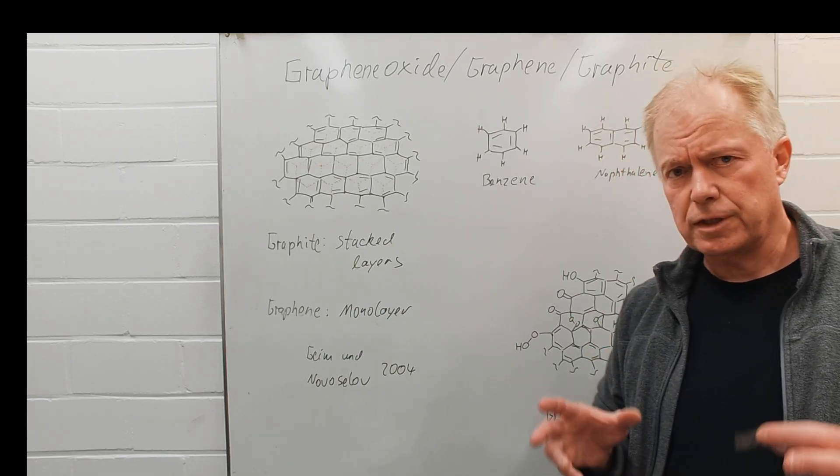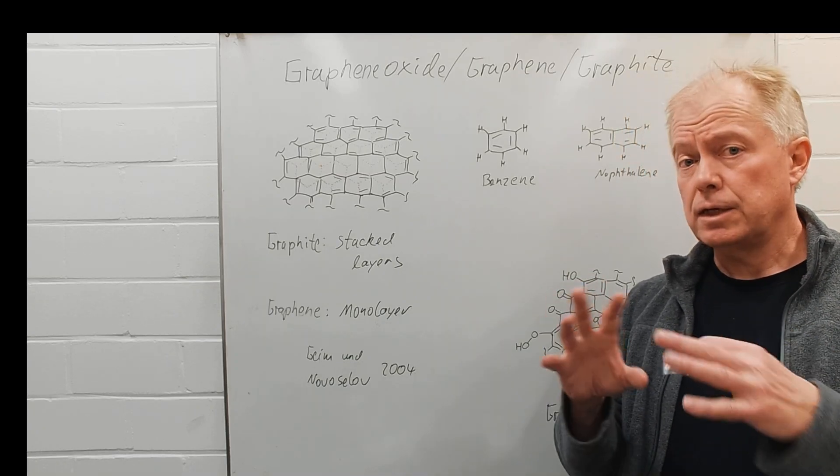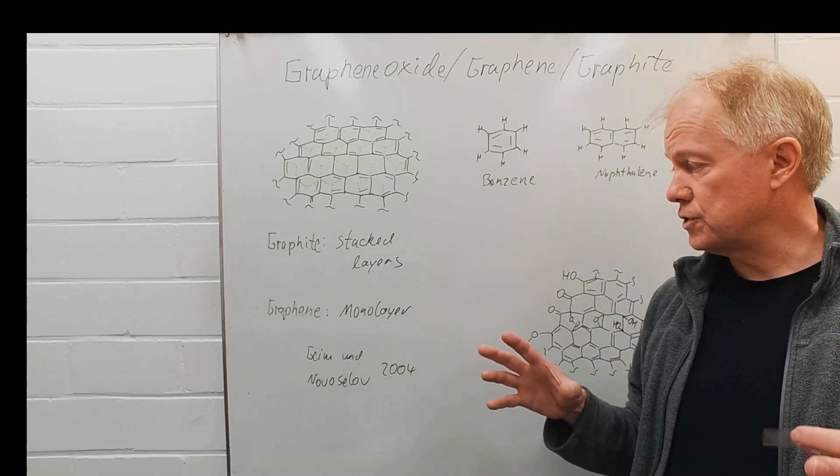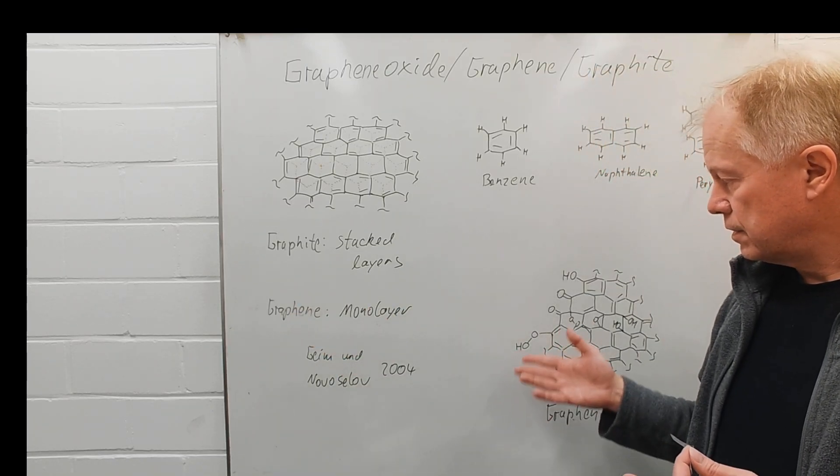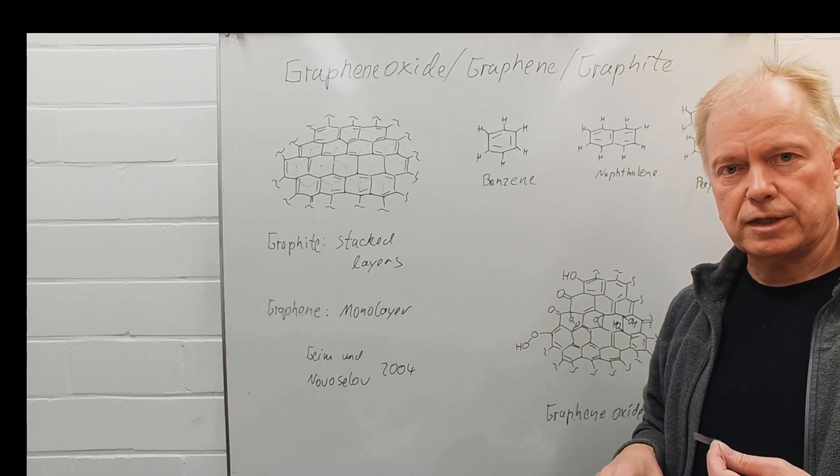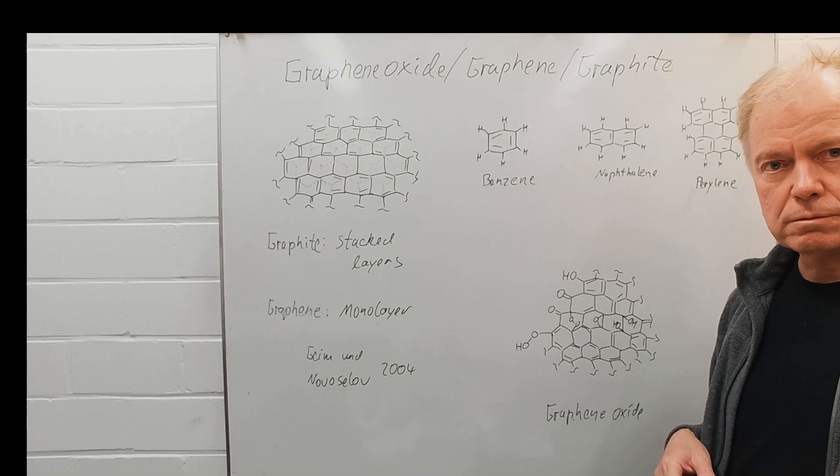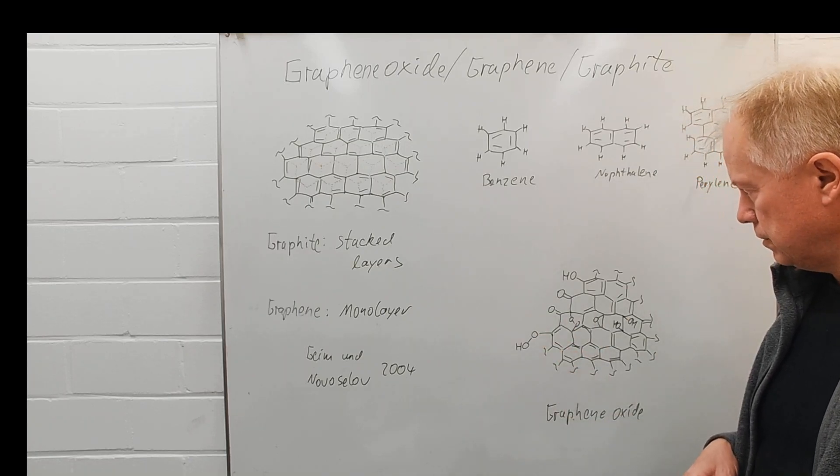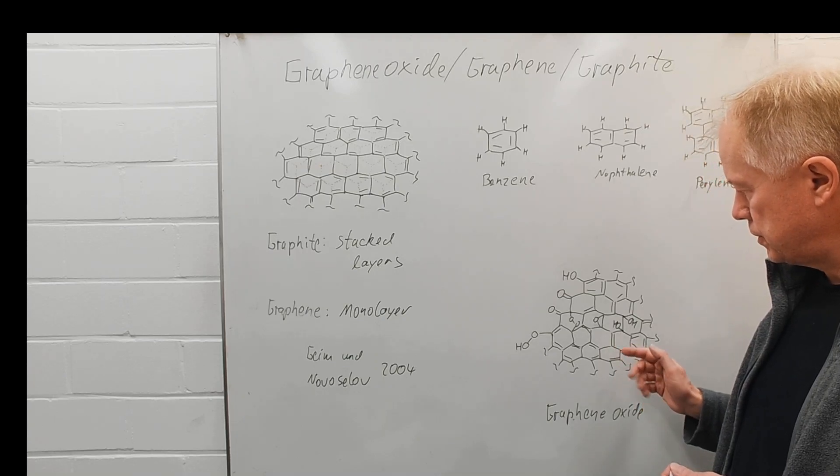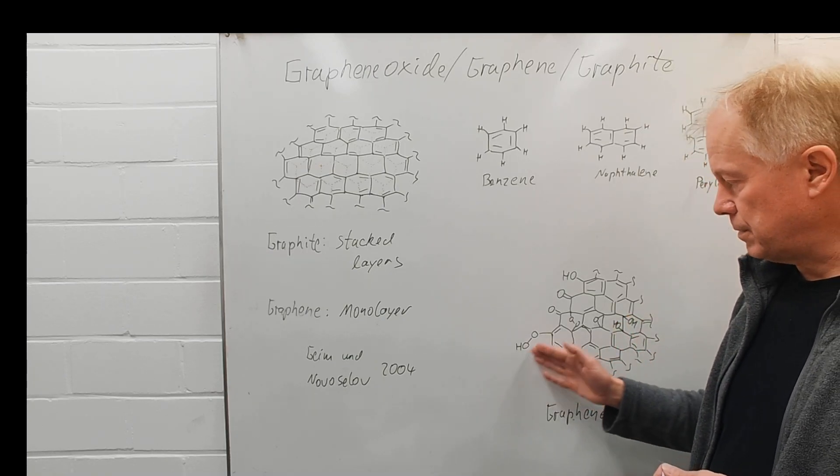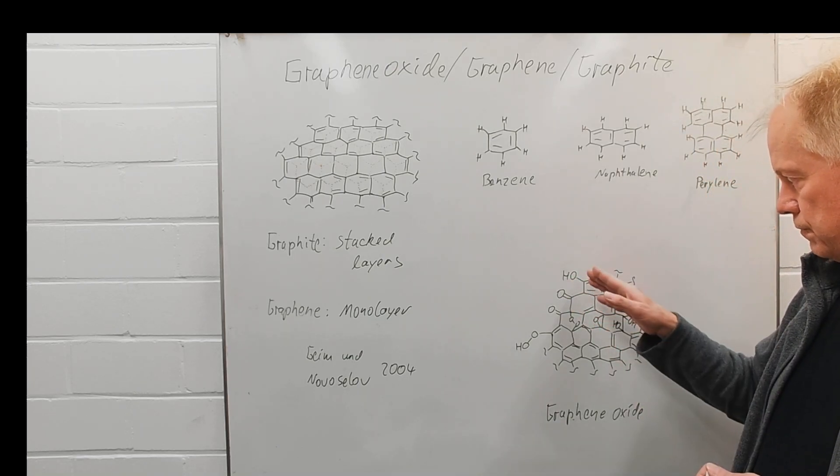Also graphene oxide is not a well-defined certain molecule. It has various sizes just as a graphene sheet and then the graphene sheets are oxidized with strong oxidizing agents transferring oxygen then for instance as endoperoxide, as epoxides. Maybe some hydroxyl groups, some hydroperoxides. Here is also a phenyl functionality.